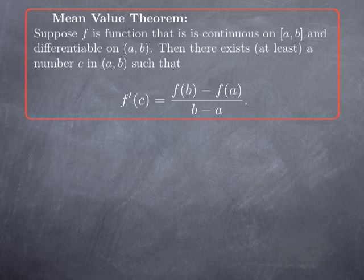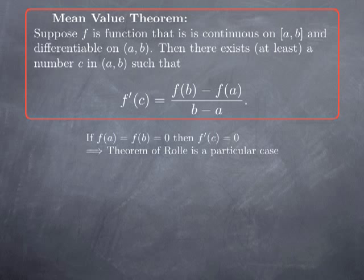So even if we don't have this additional assumption, we still have a similar conclusion: there exists a c in the open interval a, b where the derivative takes the value f(b) minus f(a) over b minus a. Of course, if we add that f(a) equals f(b), we recover the fact that the derivative takes the value zero, and therefore the theorem of Rolle is a particular case of the Mean Value Theorem.